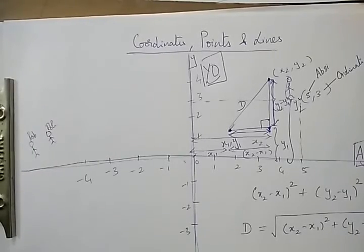d equals square root of [(x₂ minus x₁)² plus (y₂ minus y₁)²]. When the coordinates of two points are given as (x₁, y₁) and (x₂, y₂), the distance is square root of [(x₂ minus x₁)² plus (y₂ minus y₁)²]. This is the first part of this lesson on coordinates, points, and lines.